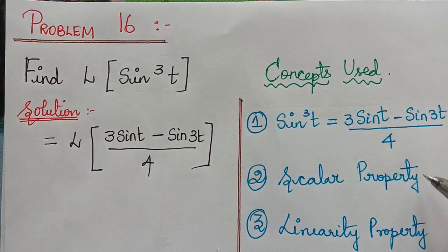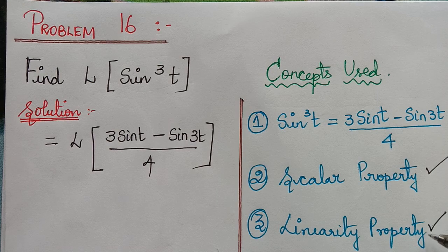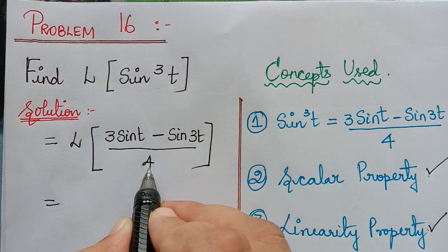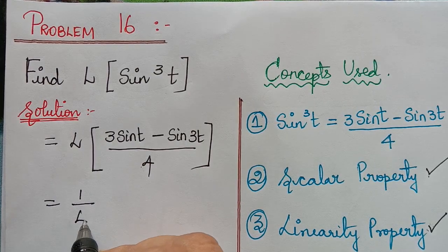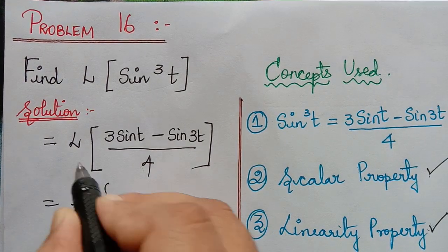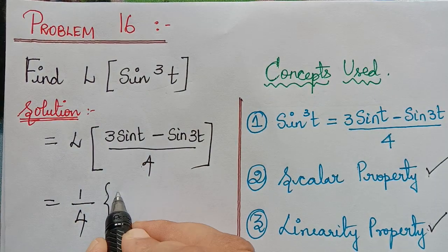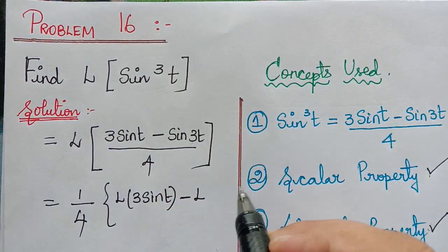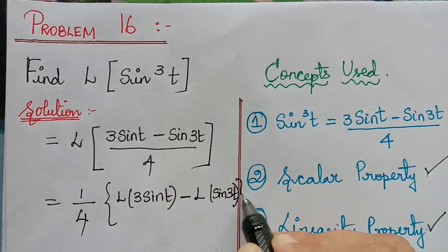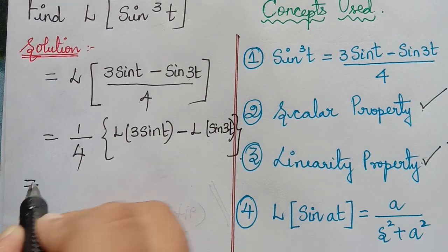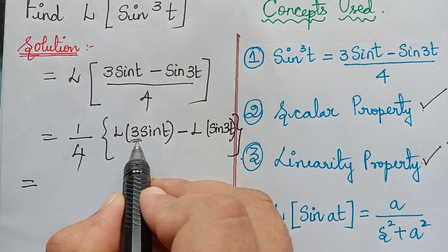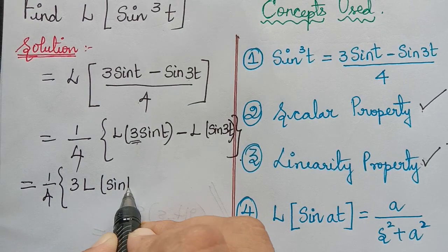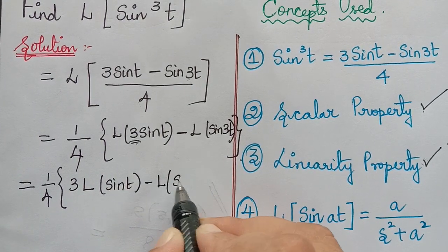Applying the scalar property, we take 1/4 outside the Laplace transform. Then by the linearity property, we write the Laplace transform of the first function minus the Laplace transform of the second function: (1/4)[L{3 sin t} − L{sin 3t}]. Applying the scalar property again, the 3 can be taken outside: (1/4)[3·L{sin t} − L{sin 3t}].